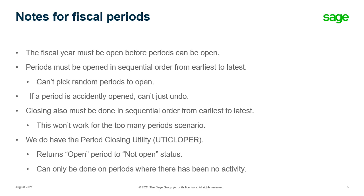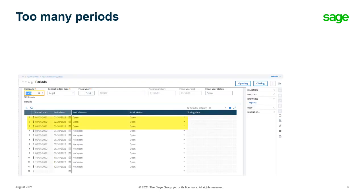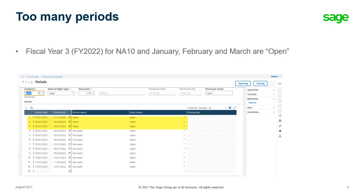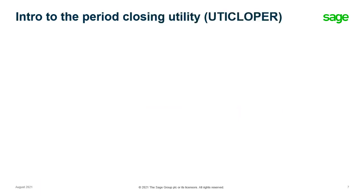The period closing utility returns open periods to not open status. It can only be used on periods where there has been no activity. So what you see here is fiscal year 3 — that's FY 2022 — with January, February, and March open. But I really only wanted to have January and February open. So what am I going to do?